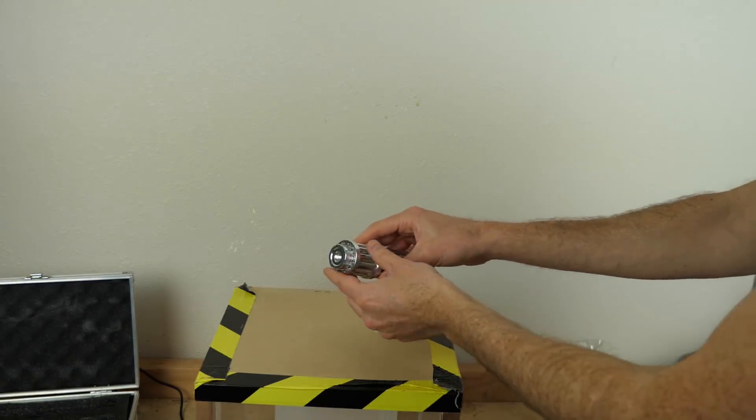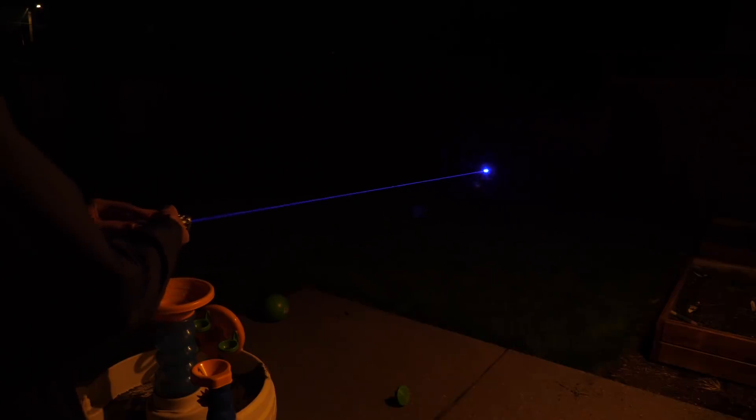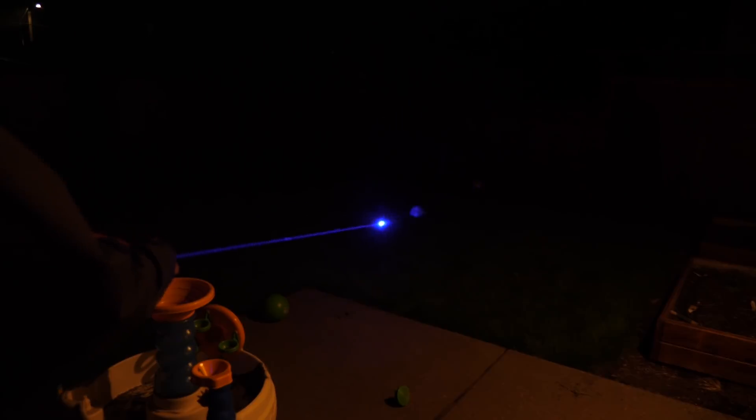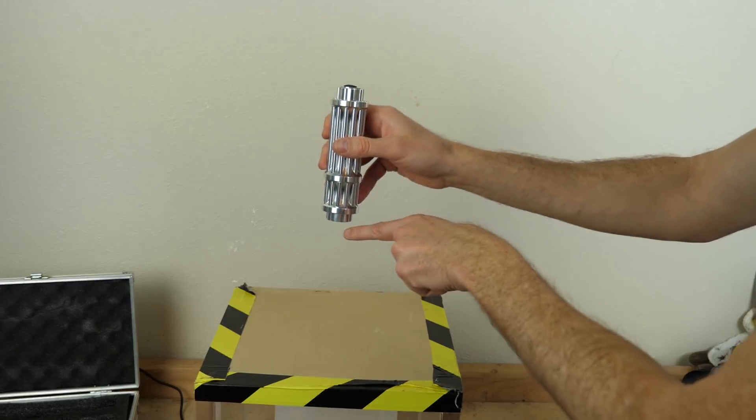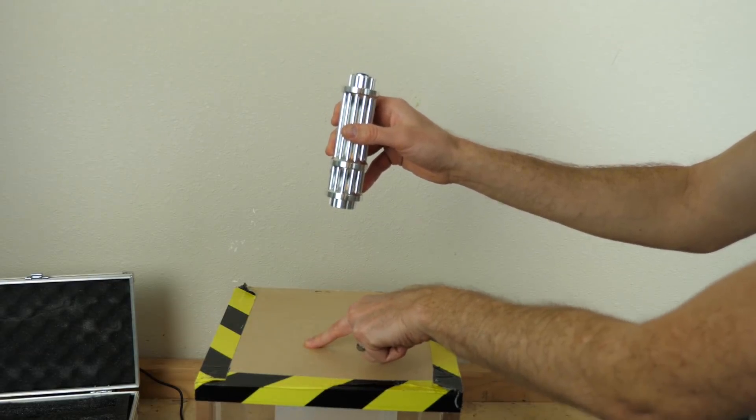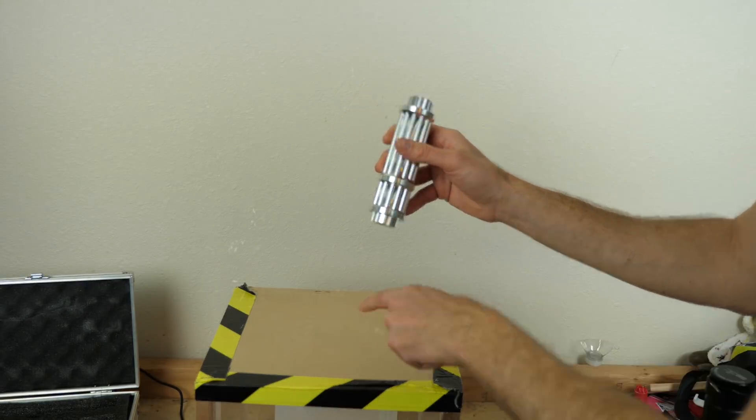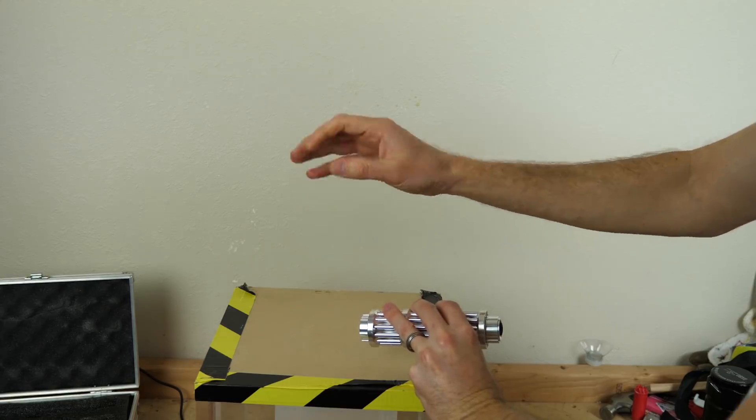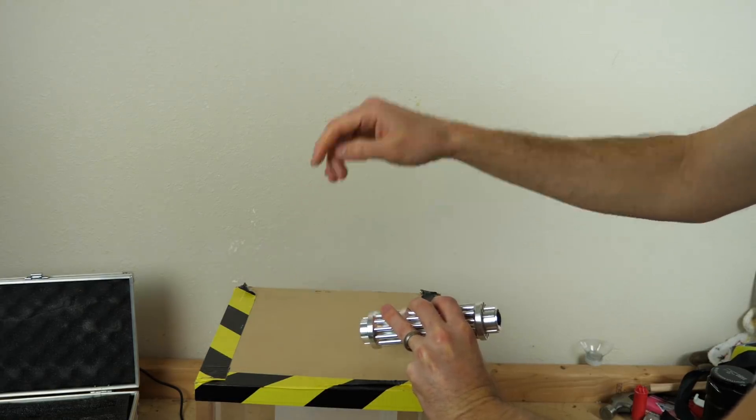This laser pointer here is 7,500 times brighter than sunlight of the same diameter. So basically what that means, if I had a little circle of sunlight here, this little circle of laser right next to it would be 7,500 times more intense. Even just a normal hand pointer that you use in presentations is 27 times brighter than sunlight.